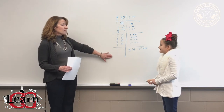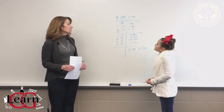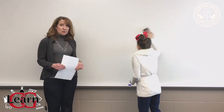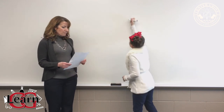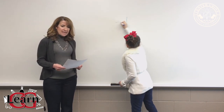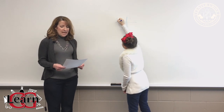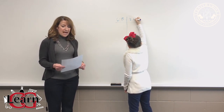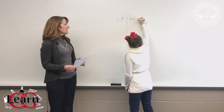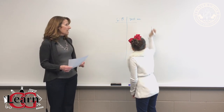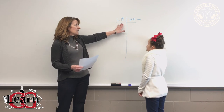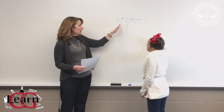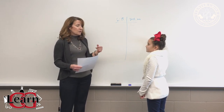Another problem we can use to solve using this strategy involves adding or subtracting time. This problem is: Bella's gymnastics class began at 6:15. It lasted two hours and 15 minutes. What time was the class over? Lexi is again setting up the t-chart. This time she's putting the beginning time on one side, showing how much time has passed on the other side, and she'll find out the answer on that side of the chart.